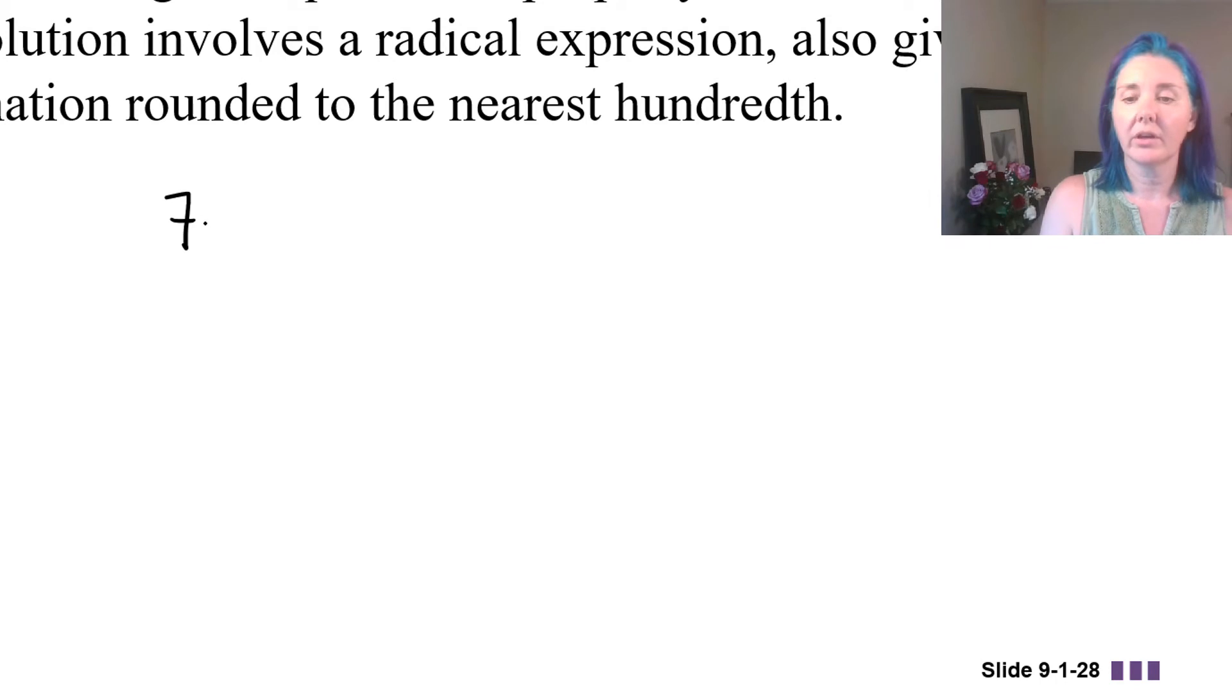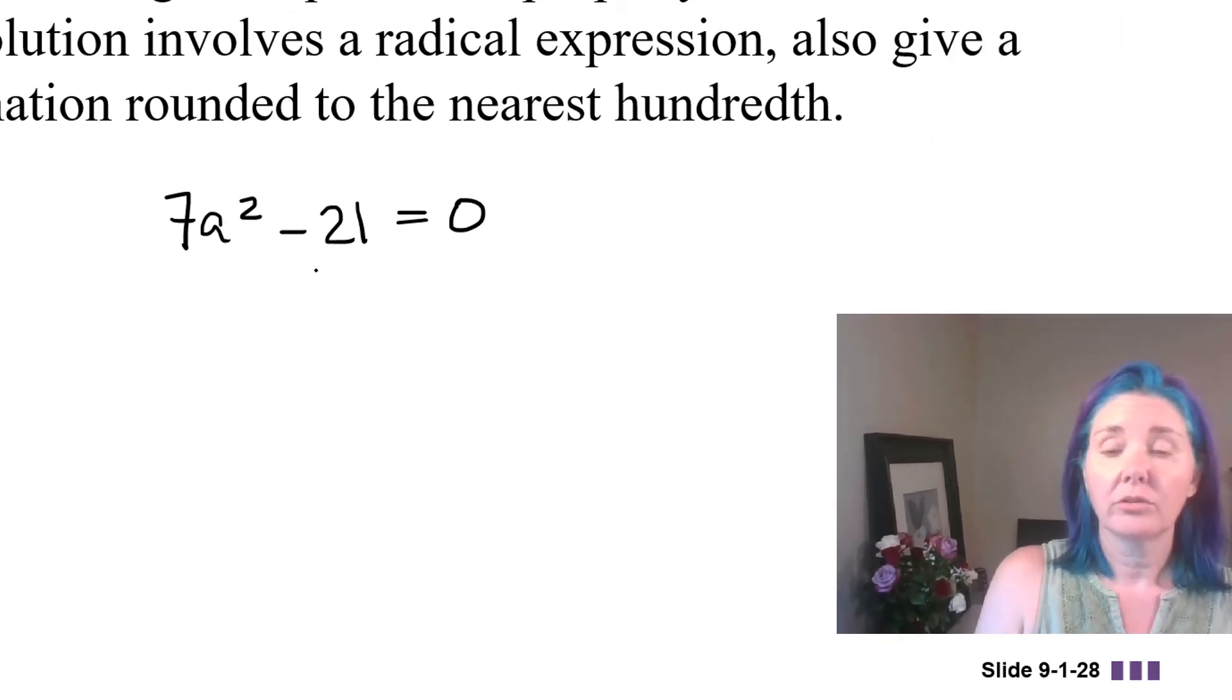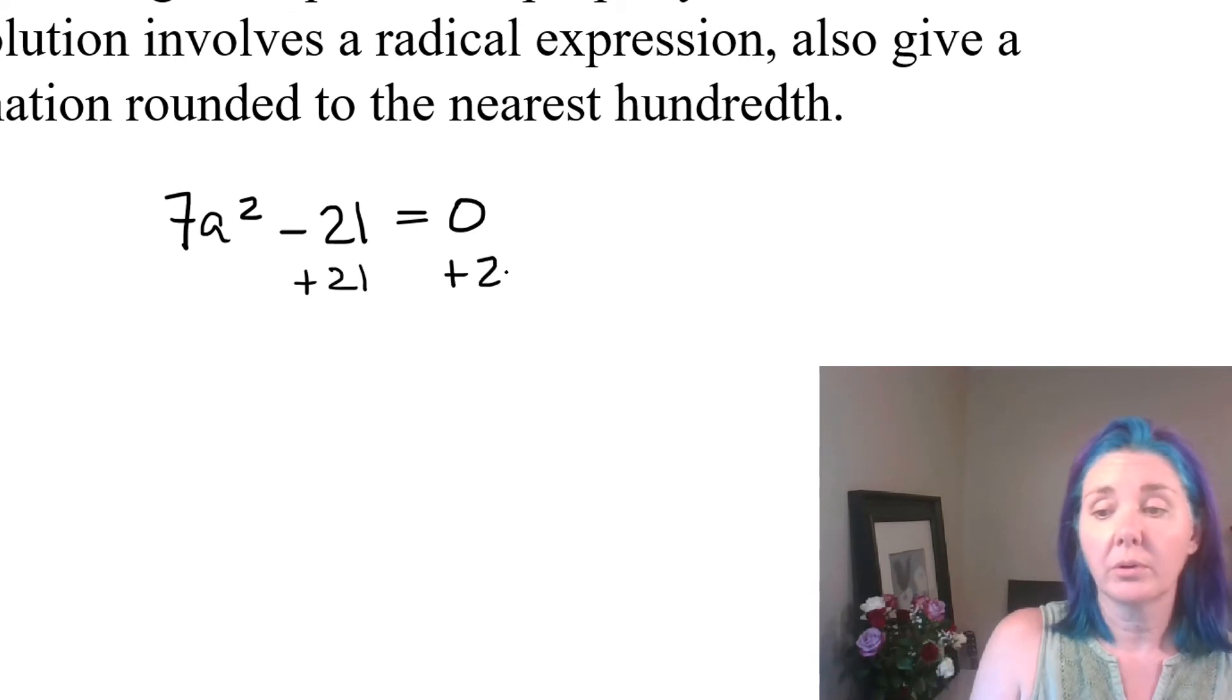Let's do one more. Now let's solve 7a squared minus 21 equals 0. Remember, when we have a variable squared, if there's no other variable in the equation, what you want to do is get that variable squared equal to a number so you can use the square root property. That means we have to get a squared by itself in this problem. So the first thing I'm going to do is add 21 to both sides of the equal sign, keeping the balance. That gives us 7a squared equals 21.